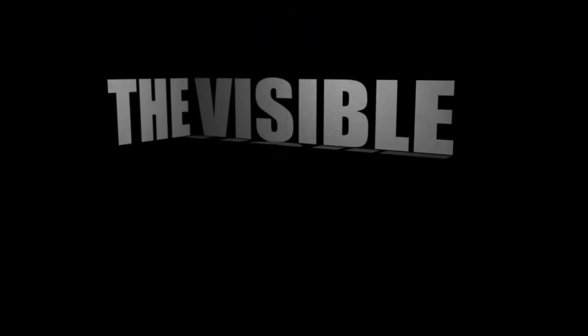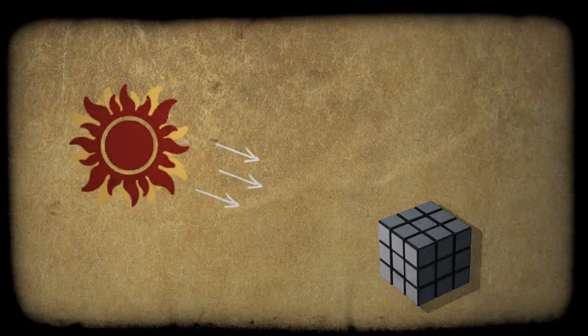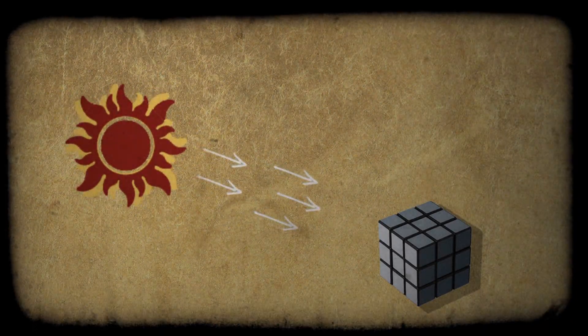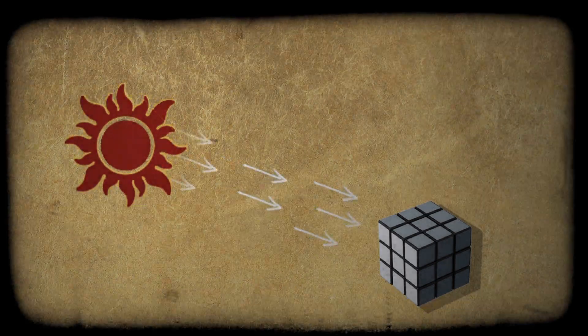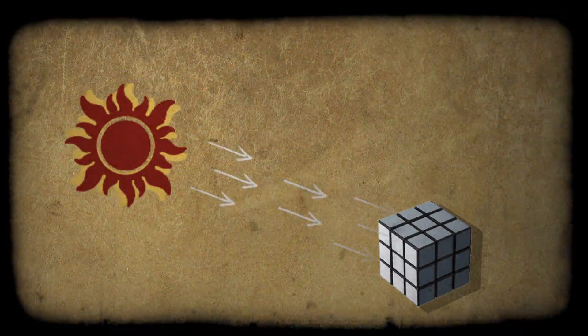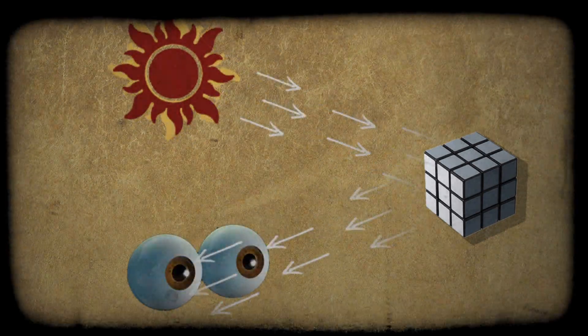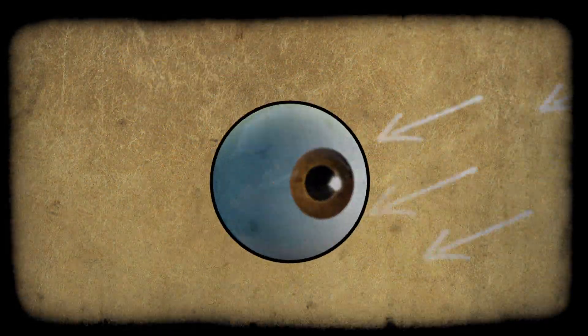We know that light consists of rays coming from a source, like the sun. These rays are made of photons, which travel through space. When they collide with objects, they are reflected in many directions, and one of these directions can reach our eyes.